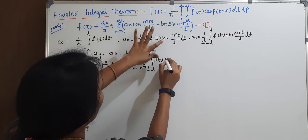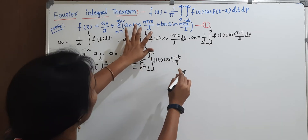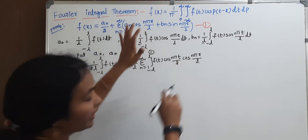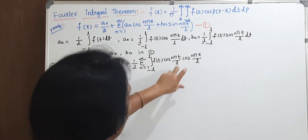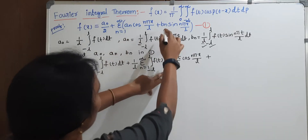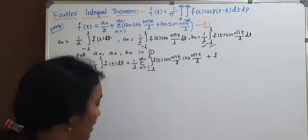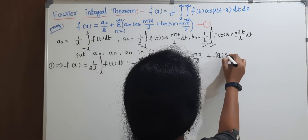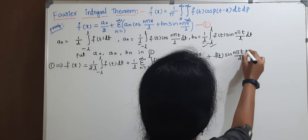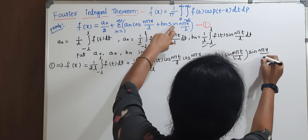After taking common, in the aₙ place we have f(t) cos(n·pi·t / l) cos(n·pi·x / l), and for the bₙ term we have f(t) sin(n·pi·t / l) sin(n·pi·x / l), and the whole term has dt.